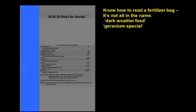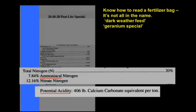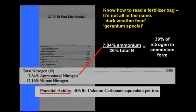If you look at a fertilizer bag, it's important to know how to read it — you shouldn't just look at the label and say 'I want the dark weather feed' or 'I want the geranium special.' Here's an example of a 20-10-20 type fertilizer. Of the nitrogen, 7.84% is in the ammoniacal nitrogen form and 12.16% is in the nitrate nitrogen form. It has a potential acidity of 406 pounds per ton. To find the percent ammoniacal nitrogen, divide 7.84% by the total nitrogen of 24%, giving you 39% of the nitrogen in the ammoniacal nitrogen form.